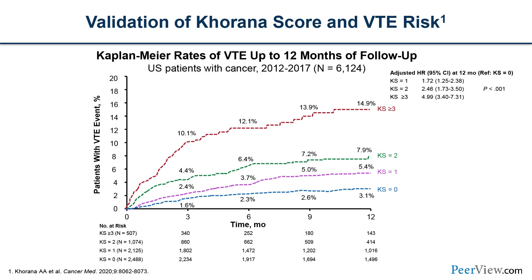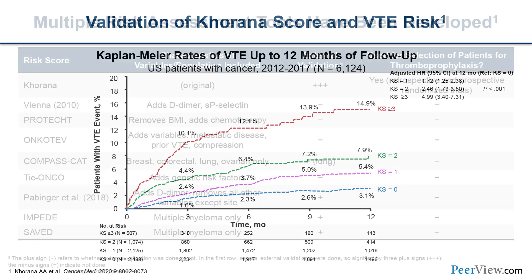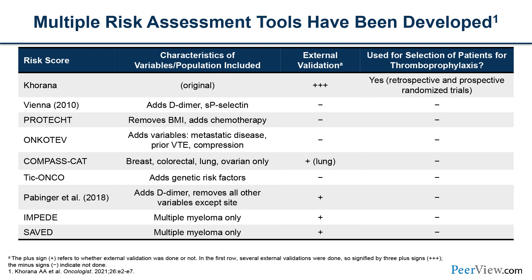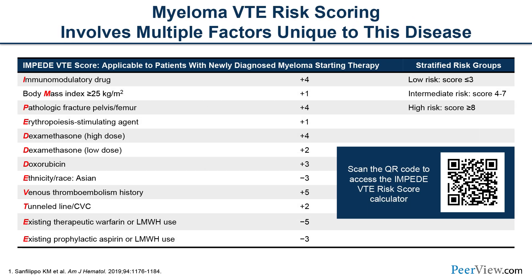This risk score has been validated in a variety of studies, showing that even in the modern era it is associated with increased risk of VTE, and risk climbs the greater the number of points on this score. Multiple other risk assessment tools have also been developed, including from a group in Vienna that added D-dimer and P-selectin, a PROTECT risk score, and several others. Currently, ASCO and ASH guidelines continue to recommend only the Khorana score for risk assessment clinically; some other scores are still undergoing validation. The exception is two scores developed specifically for the myeloma population — IMPEDE and SAVED.